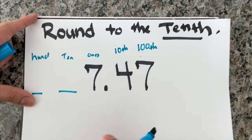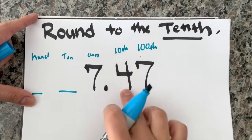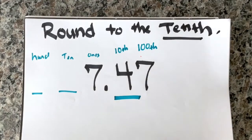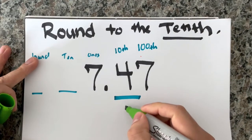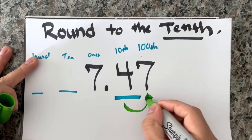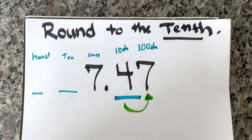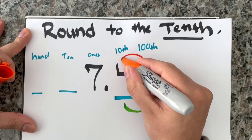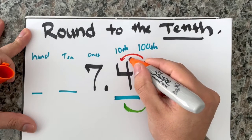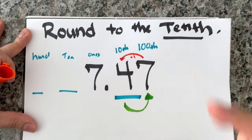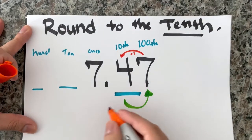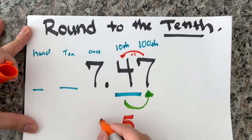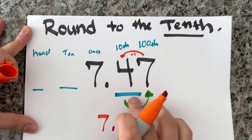If we're rounding to the nearest tenth, find where the tenths place is, then underline it — that's step one. Now step two: draw an arrow to the neighbor on the right. You know the drill — if it's five or more, add one more; if it's four or less, let it rest. Looks like seven is bigger than five, so we add one more to the tenths place. Four plus one equals five. So our new number is 7.5, and everything after that becomes a zero.